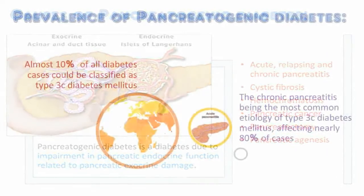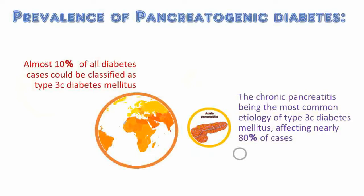Prevalence of pancreatogenic diabetes. It is very difficult to estimate the exact prevalence because of insufficient research in this area and challenges with accurate diabetes classification in clinical practice. But according to some studies, almost 10% of all diabetes cases could be classified as type 3c diabetes mellitus, with chronic pancreatitis being the most common etiology, affecting nearly 80% of cases.